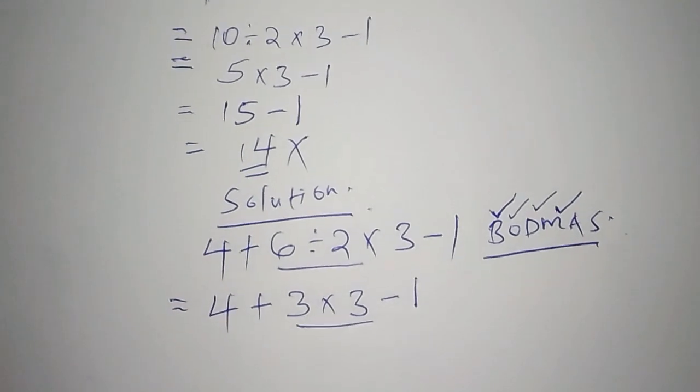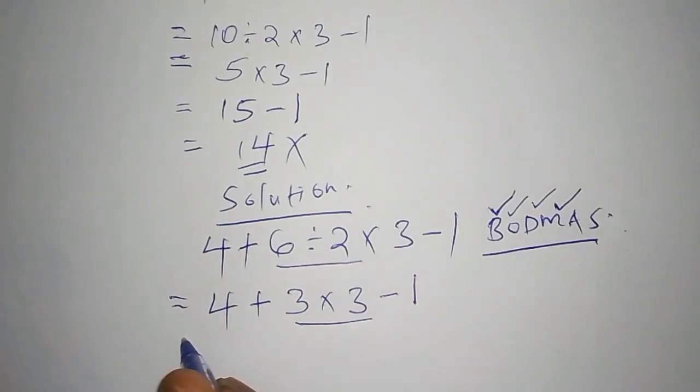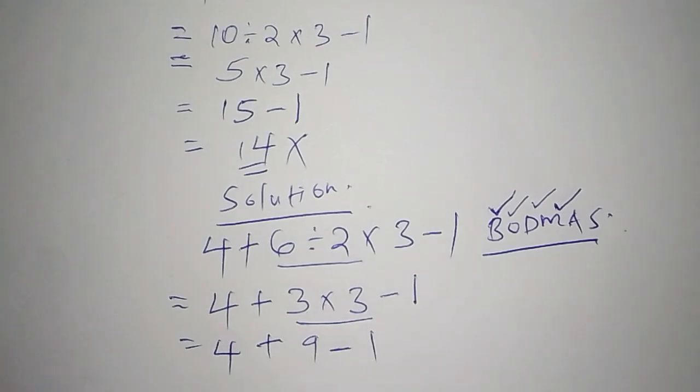So let's work out this now. So we are going to say now we shall have 4 add to 3 multiply by 3 is 9 subtract from 1.